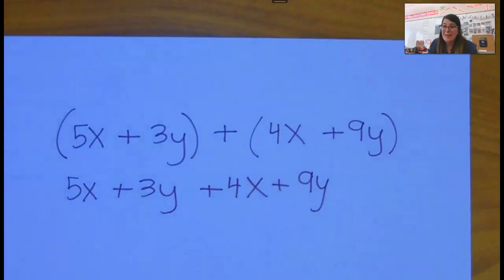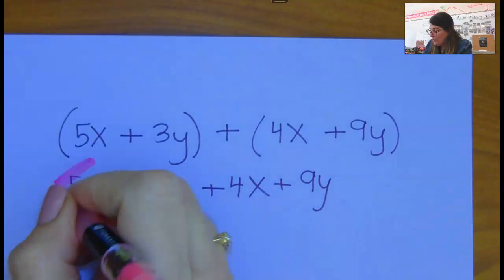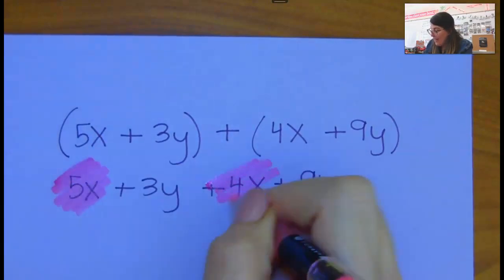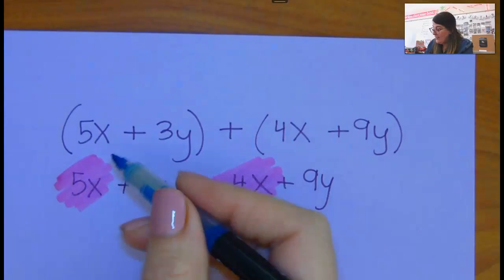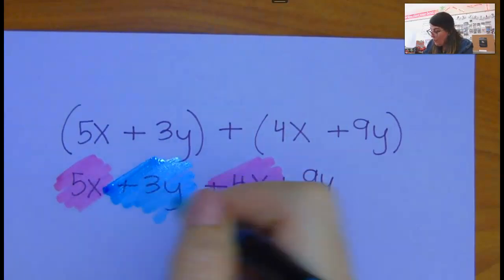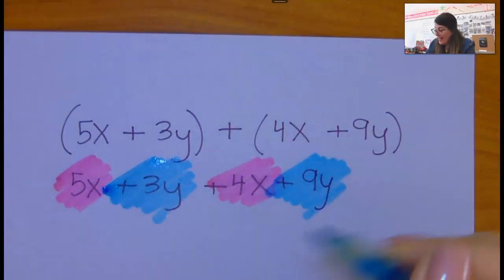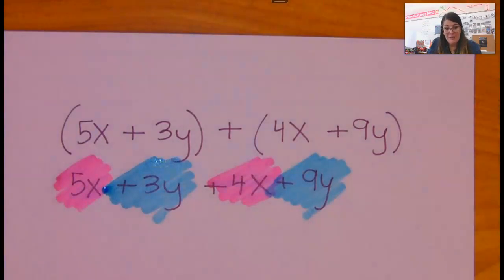And now you're just combining your like terms. So x's are the same as x's and y's are the same as y's. So you're going to make sure you grab the sign of whatever comes before that.